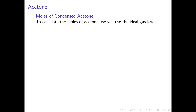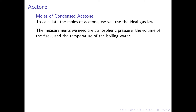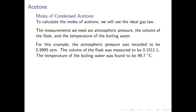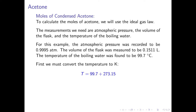The next step is to calculate the moles of acetone vapor that were condensed. To do this, we will utilize the ideal gas law. The measurements we need are atmospheric pressure, the volume of the flask, and the temperature of the boiling water. For this data, atmospheric pressure was 0.9995 atm, the volume of the flask was 0.1511 liters, and the temperature of the boiling water was 99.7 degrees Celsius. The first step is to convert the temperature to Kelvin by adding 273.15, giving 99.7 plus 273.15 equals 372.9 Kelvin.